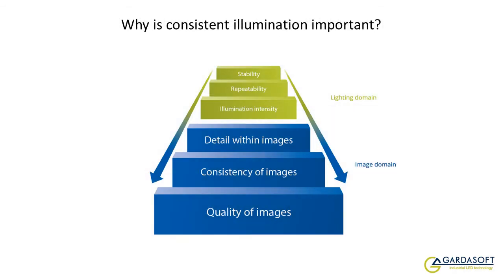This diagram illustrates the importance of consistent illumination. Fundamentally, machine vision systems evaluate the image of an object, not the object itself. As the illustration shows, lighting is the foundation of an image of an object. Variations in lighting therefore result in variations in images, and in many applications this variation is simply not acceptable.